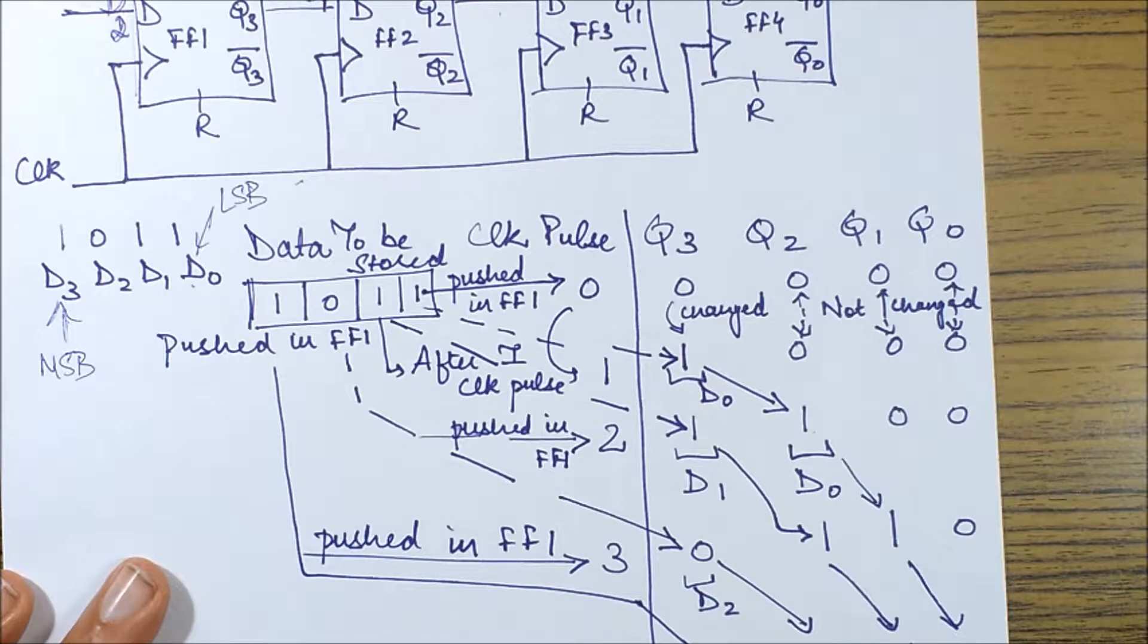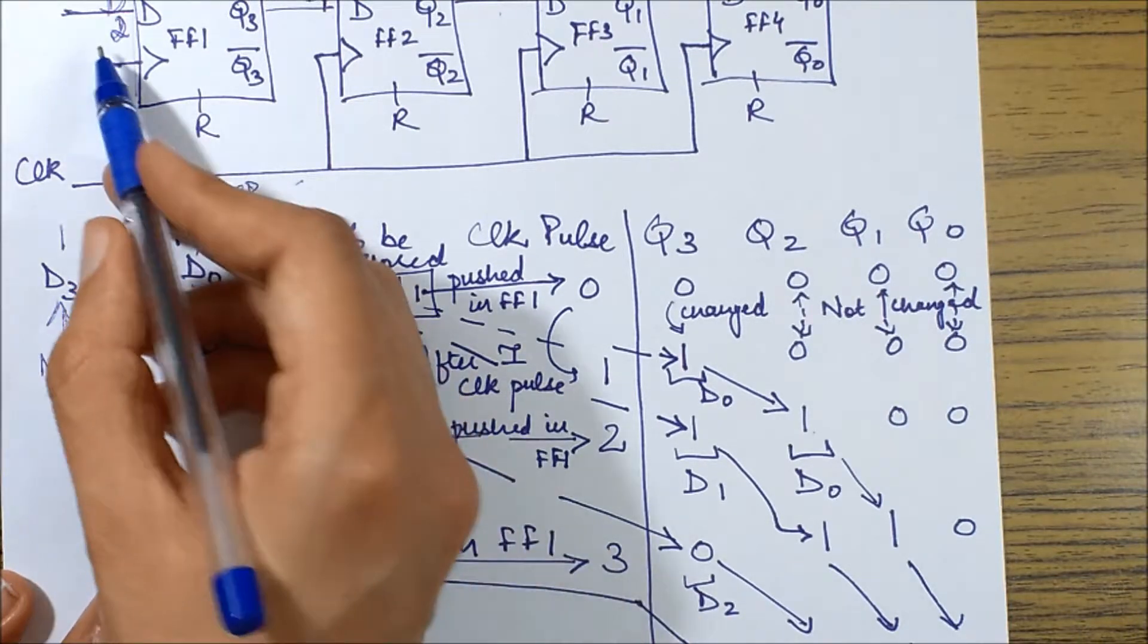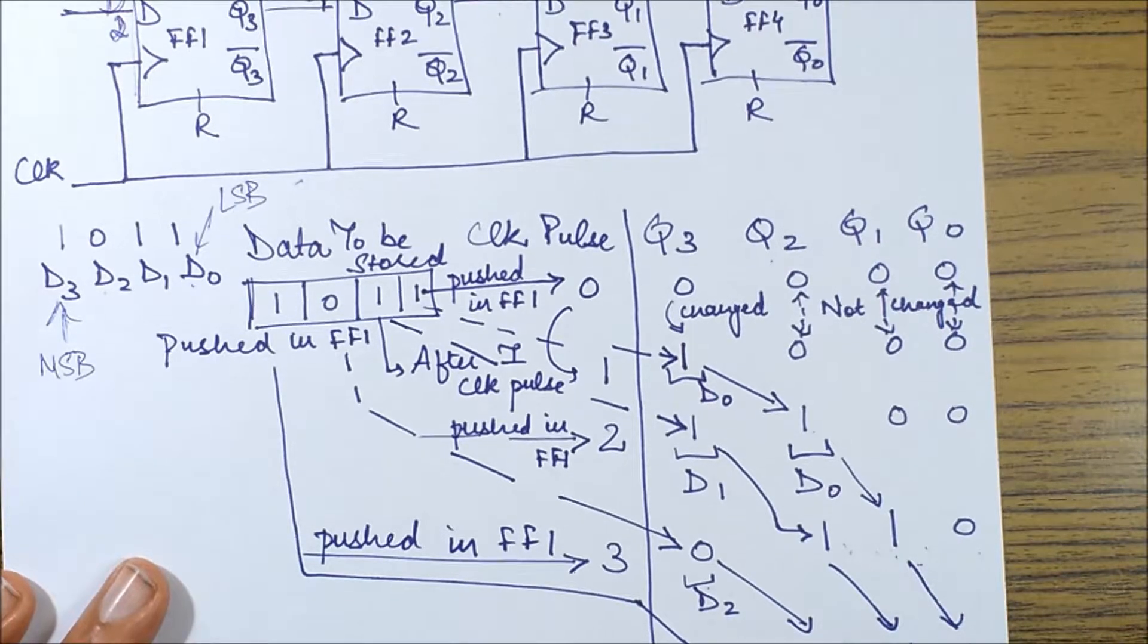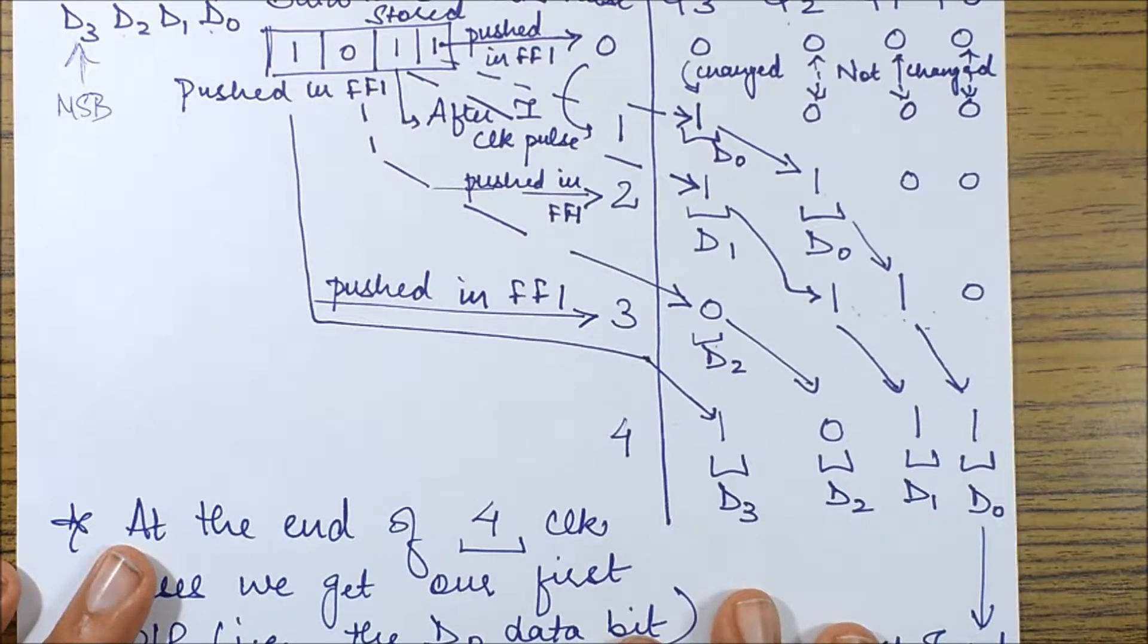At the end of the next clock pulse, zero which is the next data bit will get shifted over here, one will get shifted on the right hand side which will become Q2, and Q1 will become one. There will be no change in Q0 because this flip-flop has now got its first input, so it will generate output at the next run.